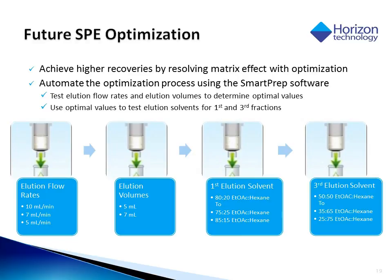Now that we have established that we can automate the SPE process of the extraction of pesticides in wine, we want to achieve higher recoveries that are comparable to the water extraction by resolving the matrix effect. To optimize this method, we want to test elution flow rates and elution volumes to determine the optimal values, and then use those optimal values to test elution solvents for the first and third fractions. For elution flow rates, we want to test 10 mL/min, 7 mL/min, and 5 mL/min. For elution volumes, we want to test 5 mL and 7 mL. For the first elution solvent, we are changing it from an 80:20 ethyl acetate:hexane to 75:25 and 85:15. For the third elution solvent, we want to change it from 50:50 to 35:65 and 25:75 to see if there is a difference.